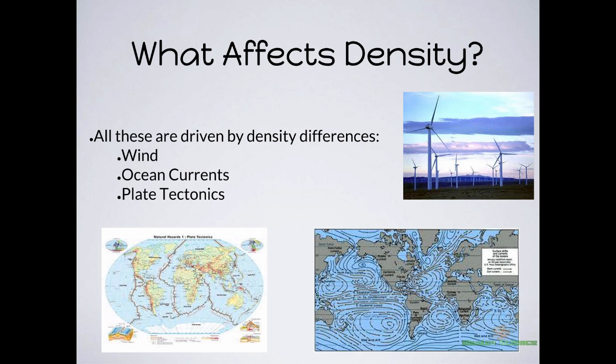Here are three things we'll talk about this year that are driven by differences in density: wind, ocean currents, and plate tectonics. We're not going to get into them right now, but these three things are driven by a difference in density — something is less dense than another thing, which causes the less dense thing to float on top of the more dense thing.